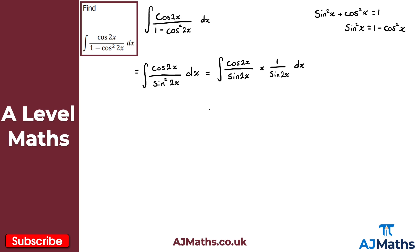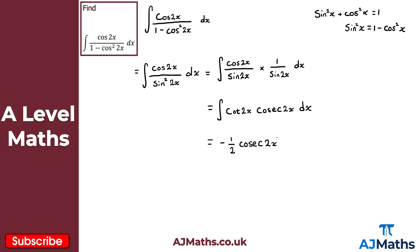Cos 2x over sin 2x is the same as cot 2x, and 1 over sin 2x is the same as cosec 2x. So we have the integral of cot 2x times cosec 2x with respect to x. This is a standard result. Since the argument is 2x, we divide through by 2, giving minus one half cosec 2x. And since there are no limits, don't forget the constant of integration: plus c.